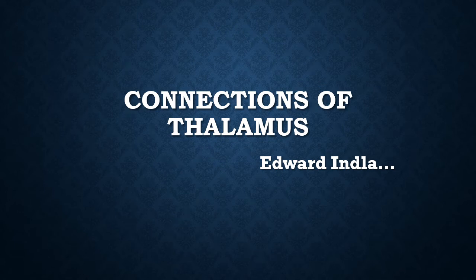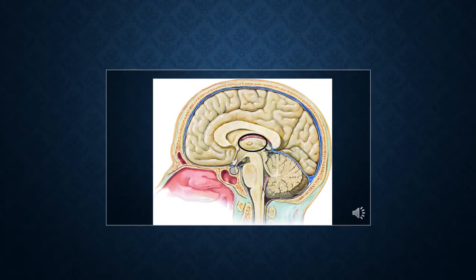Welcome back friends, good morning. Today we are going to discuss about the connections of the thalamus. In our previous class we discussed about the location of the thalamus and its different nuclei. The thalamus is located just below the columns of the fornix and the corpus callosum, and it is a part of the diencephalon.